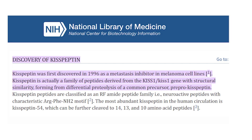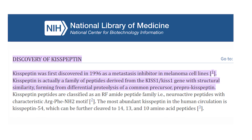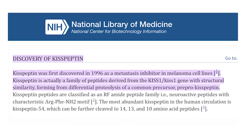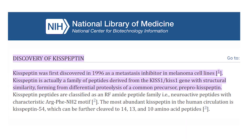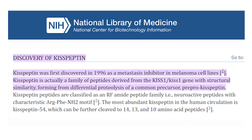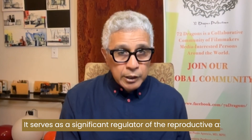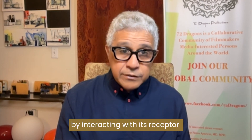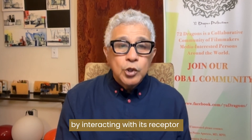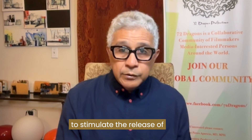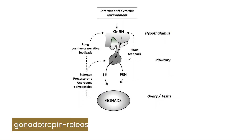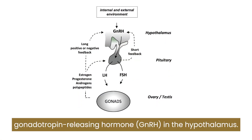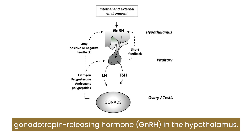Kisspeptin was first identified in 1996 as an inhibitor of metastasis in melanoma cells. It serves as a significant regulator of the reproductive axis by interacting with its receptor to stimulate the release of gonadotropin-releasing hormone in the hypothalamus.